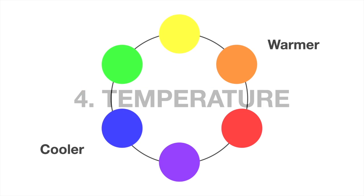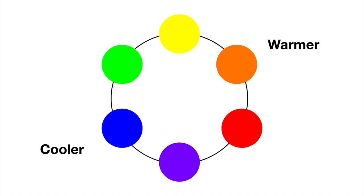And finally, temperature: blue, purple, and green are cooler than orange, red, and yellow.